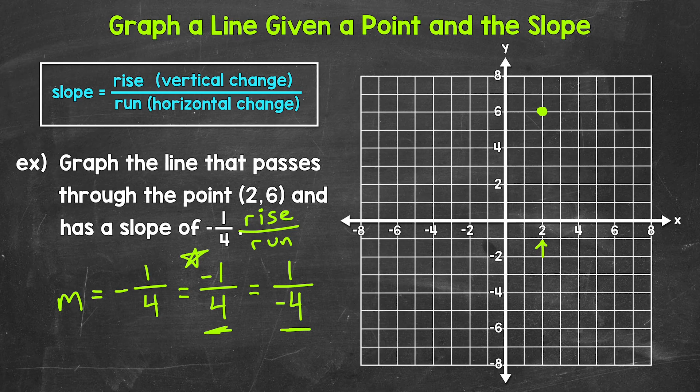Let's use the negative in the numerator first. So we have negative 1 over positive 4. Our rise is negative 1. That means we need to go down 1 from our point. So let's go down 1 unit.